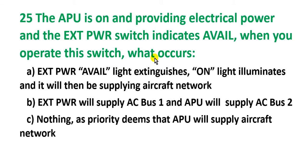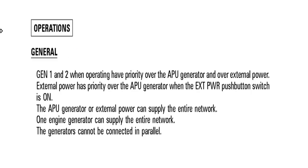I want to search about the priority. What is the priority here? External power has priority over the APU generator when the external power pushbutton switch is on.